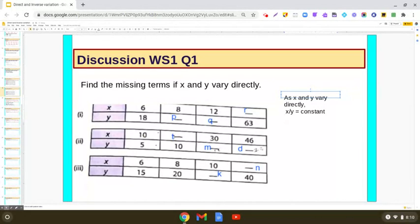So that means here 6 upon 18 should be equal to 8 upon p, and this should be equal to 12 upon q. This should be equal to r upon 63.